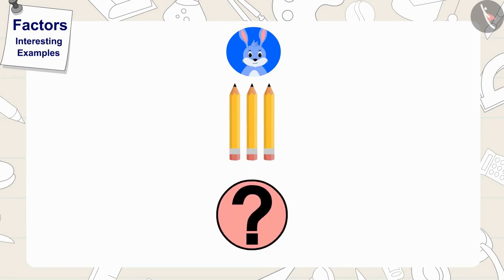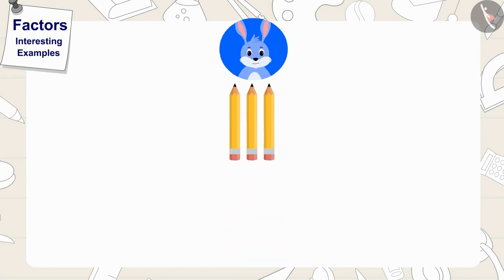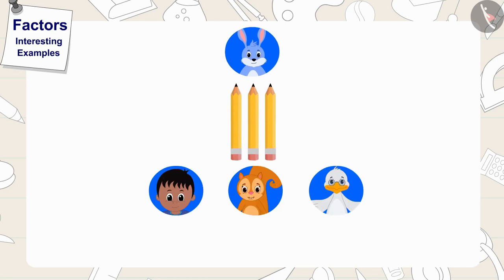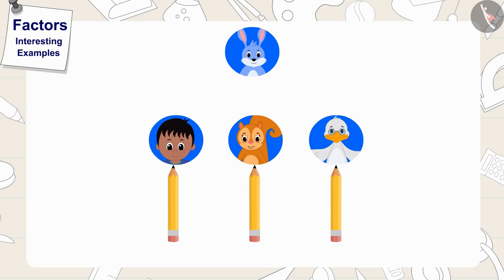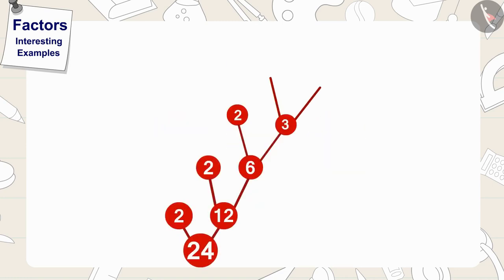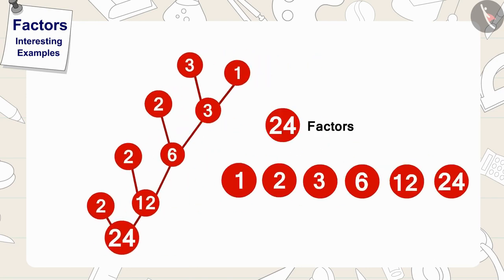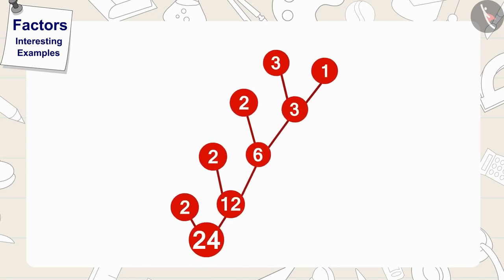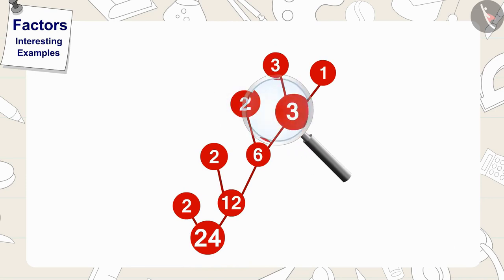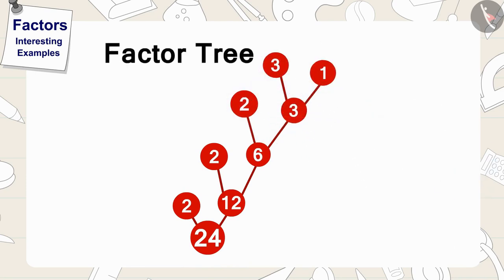Children, can this friend divide these 3 pencils equally among his friends? Yes! His friends can share these 3 pencils equally by giving 1 pencil to each of his 3 friends. Golu added it to his picture by writing the numbers 3 and 1. Do you see anything special in Golu's picture? All the factors of 24 are seen in Golu's picture. Such a picture in which we show all the factors of a number is called a Factor Tree.